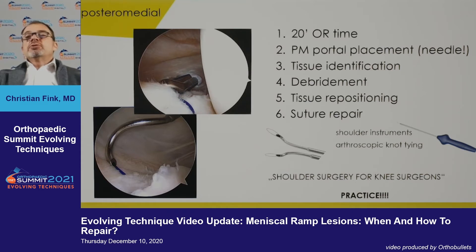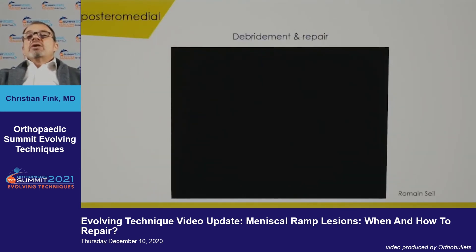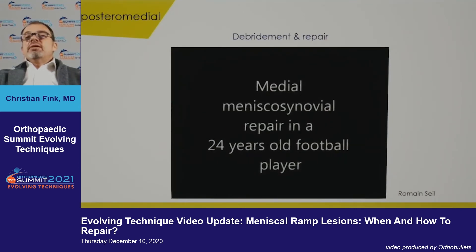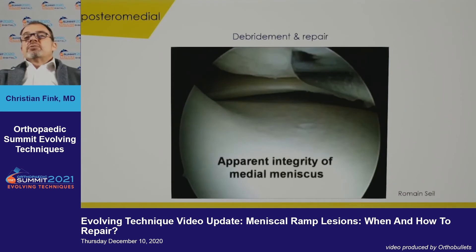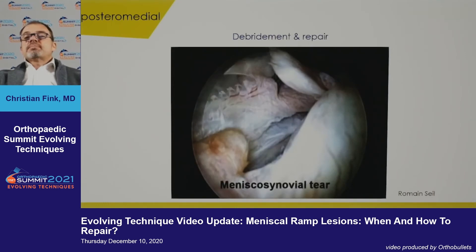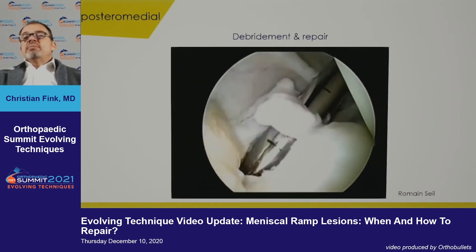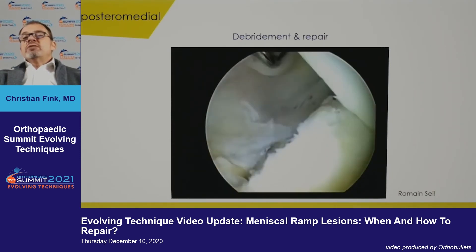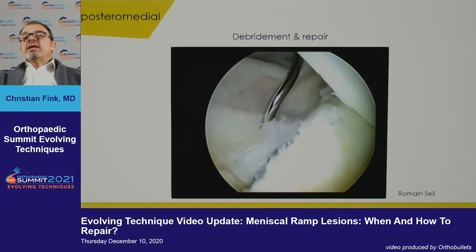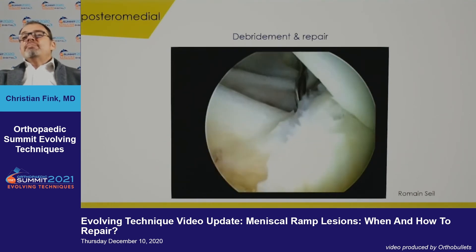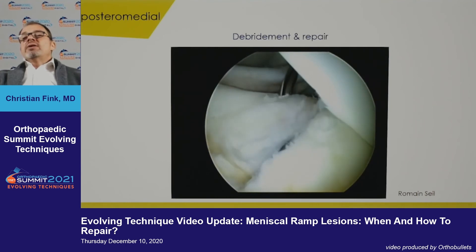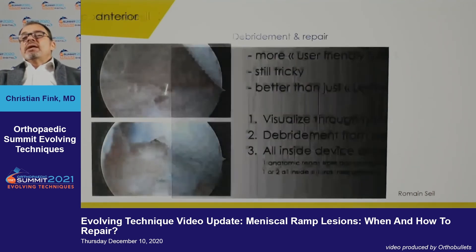If you have a good friend who is a shoulder surgeon and you're not doing this, take a lesson from him — it's really very helpful. Here is an example of a repair in a 20-year-old football player from Romain Seil, a good friend with extensive experience. You can see the lesion and the debridement, which is very important in chronic lesions — you want to create some bleeding, because good bleeding means good healing potential. You need shoulder instrumentation to bring it back, and in this chronic lesion, there's no way you can repair it from the front — posterior medial repair is the best approach.